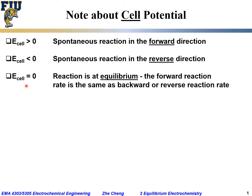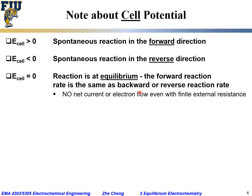If the cell potential you calculated is zero, it means the reaction is at equilibrium — the forward reaction rate equals the backward or reverse reaction rate. Even when you connect the two electrodes with finite or even zero resistance, there will be no net current or electron flow through the external circuit.